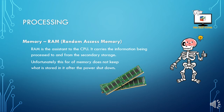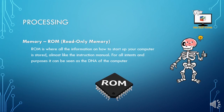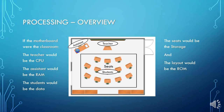RAM — random access memory — is the assistant to the CPU. It carries the information being processed right now to and from the secondary storage. Unfortunately, this form of memory doesn't keep data if the power shuts down. ROM — read-only memory — is where all the information on how to start up your computer is stored, almost like the instruction manual; for all intents and purposes it can be seen as the DNA of your computer. As an overview: if the motherboard were the classroom, the teacher would be the CPU, the assistant would be the RAM, the students would be the data, the seats would be the storage, and the layout would be the ROM.